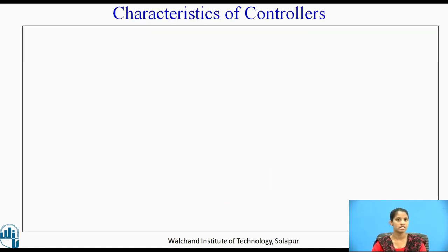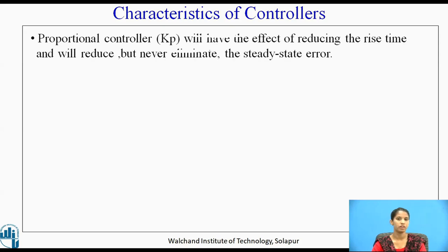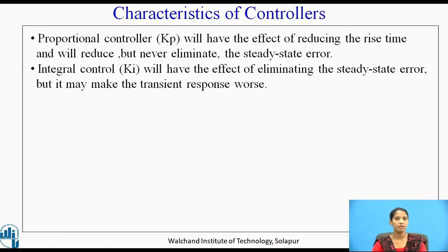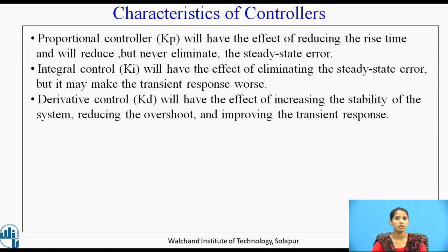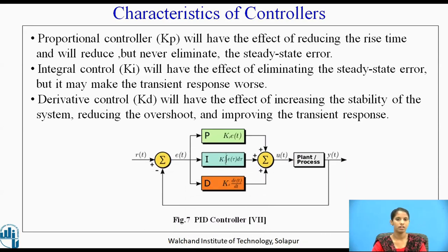The characteristics of each type of controller are as follows. The proportional controller will have the effect of reducing the rise time and will reduce, but never eliminate, the steady state error. The integral controller will eliminate the steady state error, but it may make the transient response worse. The derivative controller will have the effect of increasing the stability of the system, reducing the overshoot, and improving the steady state and transient response. Because of all these factors, the combination of P, I, and D controller is most effective.